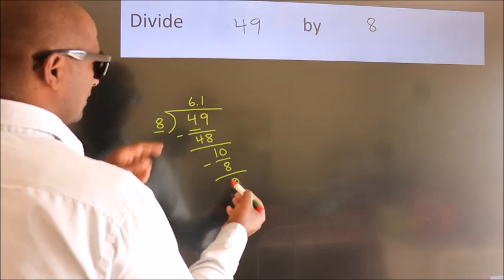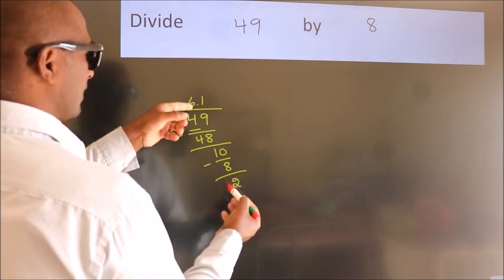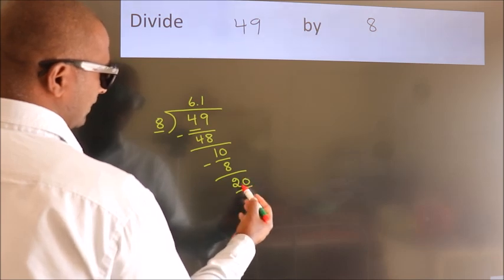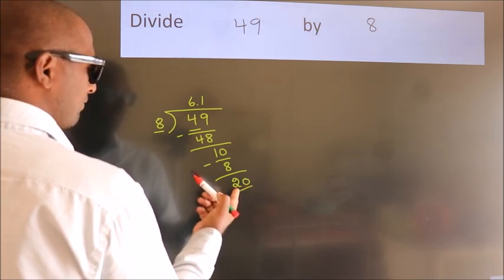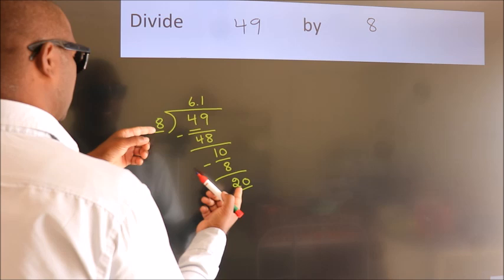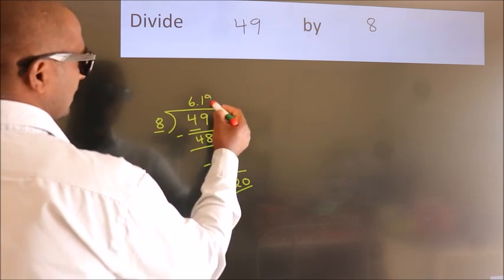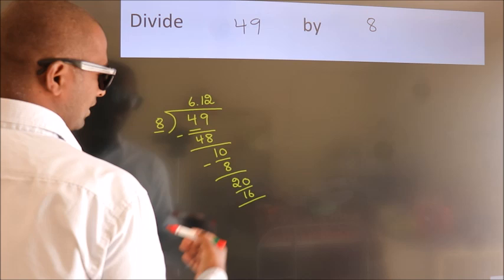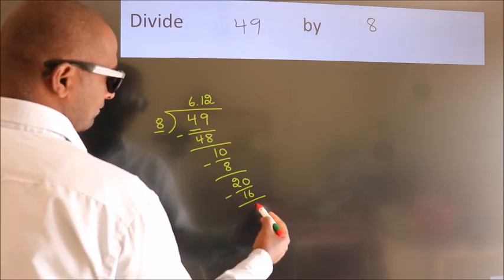After this, we already have the decimal, so we directly take 0, giving us 20. A number close to 20 in the 8 table is 8 times 2, which is 16. Now we subtract and get 4.